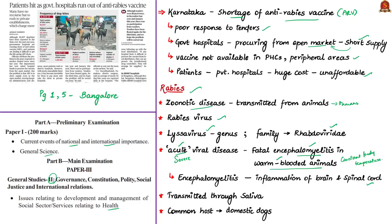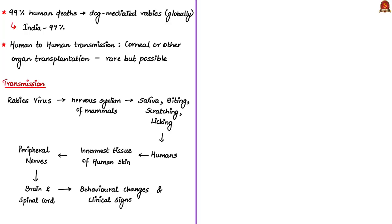The rabies virus is found in wild and some domesticated animals and is transmitted through their saliva. The most common host is domestic dogs. Globally, more than 99% of human deaths from rabies are caused by dog-mediated transmission. In India, dogs are responsible for about 97% of human rabies cases, followed by cats at about 2%, and also jackals, mongoose and other animals. Human-to-human transmission through corneal or organ transplantation is very rare but possible, and has occurred among recipients of transplanted corneas, solid organs, and vascular tissues.